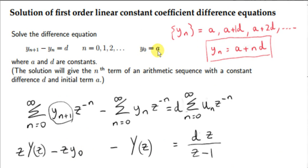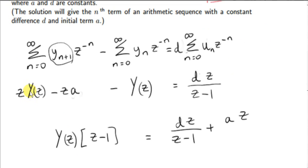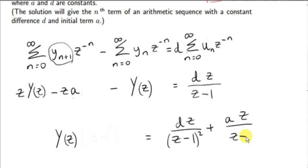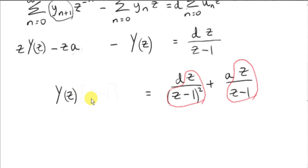We substitute in for y₀, which is the constant a. Then we factorize out big Y(z), giving Y(z) times (z minus 1). We bring the minus z·a over — it becomes plus a·z. Next, we divide both sides by z minus 1, giving dz over (z−1)² plus az over (z−1). Luckily, we don't have to do any partial fraction decomposition here, because both functions have inverse transforms that can be read directly from the tables.